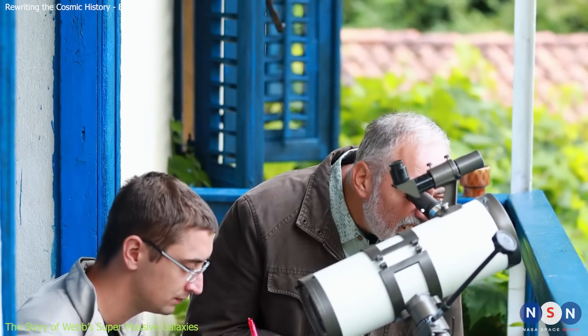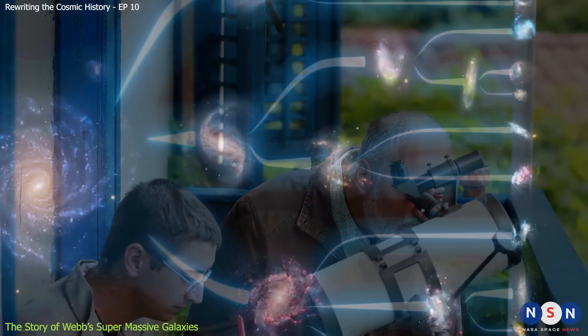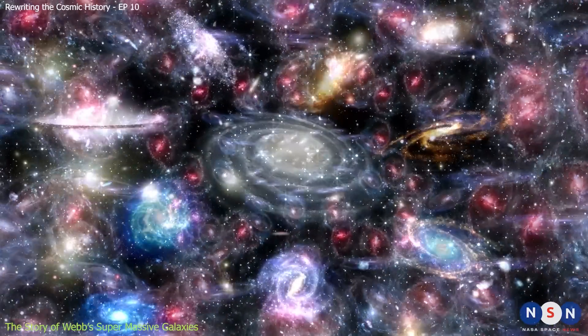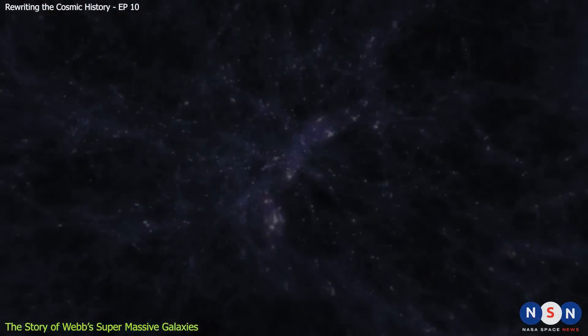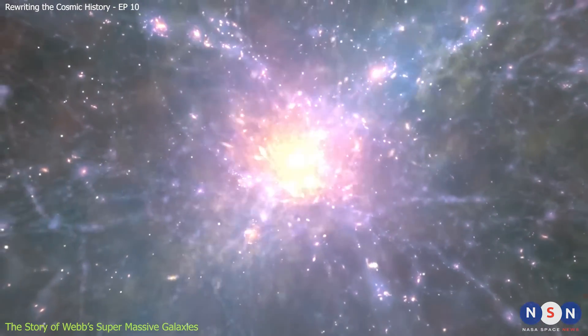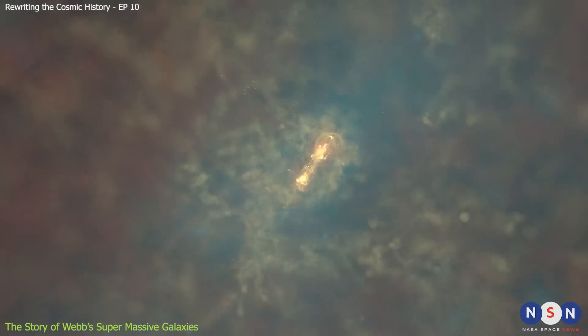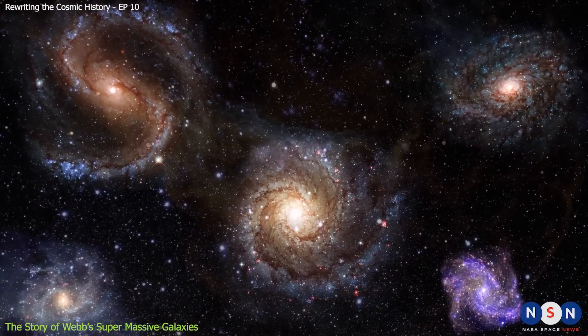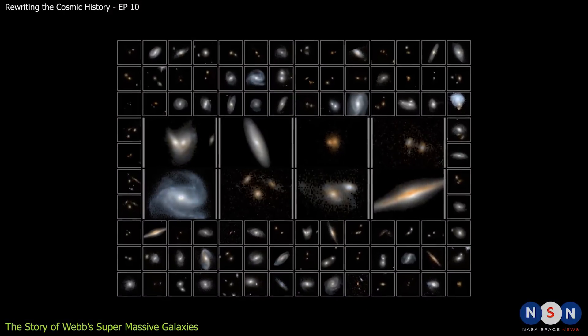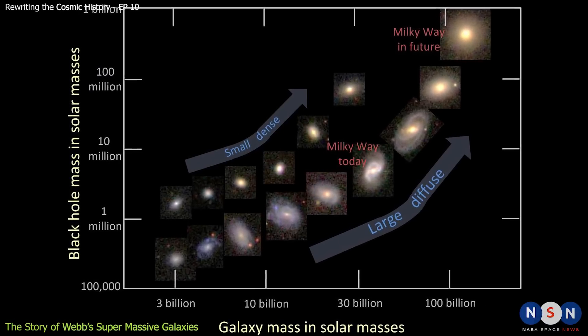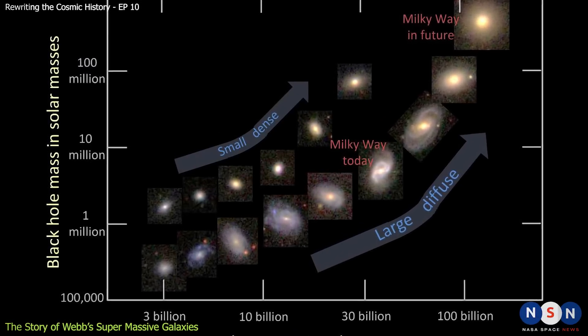Imagine you are an astronomer or astrophysicist who has spent years studying the formation and evolution of galaxies. You have learned that galaxies are the building blocks of the universe and that they come in different shapes and sizes. You have learned that galaxies form from gas and dark matter that clump together under the influence of gravity. You have learned that galaxies grow by forming new stars and by merging with other galaxies. You have learned that galaxies change over time, becoming more complex and diverse as they age. You have learned all this from observing galaxies at different distances and times in the history of the universe. You have a model that explains how galaxies form and evolve, and you are confident that it works well.